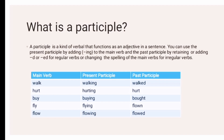For the present participle, we have to add -ing to the main verb. Just like from walk, it will become walking. Hurt becomes hurting. Buy becomes buying. Fly becomes flying. Flow becomes flowing.